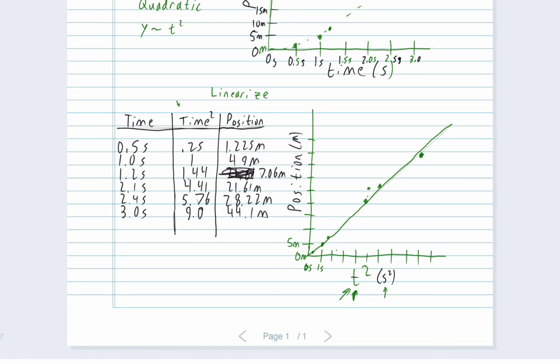So now notice what happened. Our quadratic function became a linear line of best fit. Now my graph wasn't perfect. These aren't perfect increments, but now we can easily see that this was a quadratic relationship.